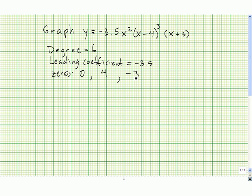We should also note what the multiplicity of each zero is. The multiplicity of 0 is 2. The multiplicity of 4 is 3. And finally, the multiplicity of negative 3 is 1.